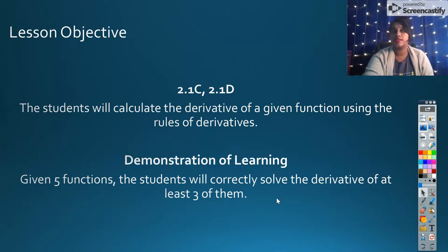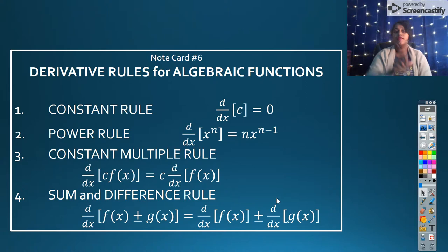It was a long process, so today I'm going to show you some of those shortcuts. These are the four that we're going to be talking about: our constant rule, our power rule, the constant multiple, and the sum and difference rule. I hope you recognize these four terms as we continue on because I will use these four terms throughout class all the time.